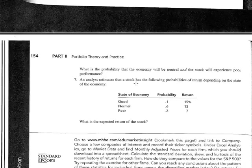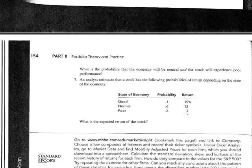Number seven: an analyst estimates that a stock has the following probabilities of return depending on the state of the economy — good, normal, and poor. What is the expected return of the stock? You just take the weighted average: multiply 0.1 by 15, then 0.6 by 13, then 0.3 by 7, and add them all together. The answer is 11.4%, which is the expected return of the stock.